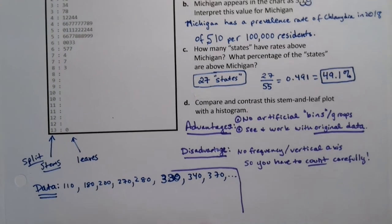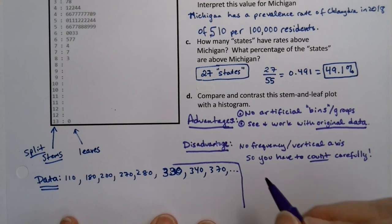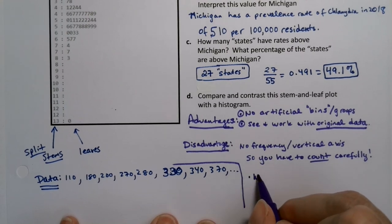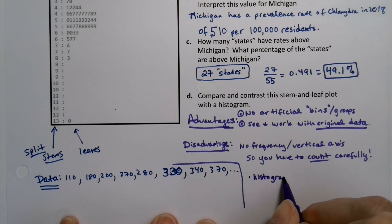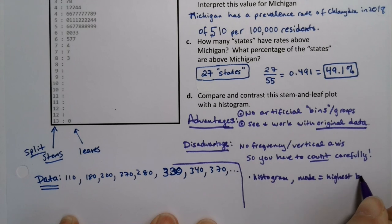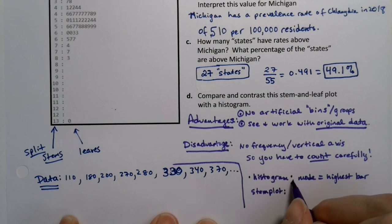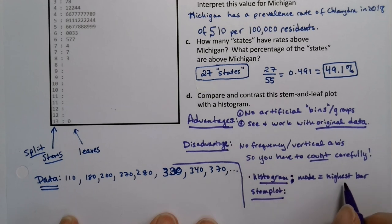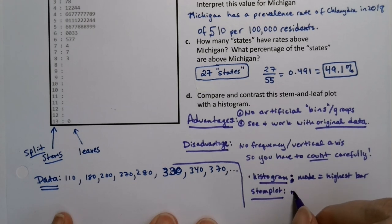Whereas in a histogram, it's just whichever bar is the easiest. These are also, by the way, called stem plots sometimes. So it's okay to say stem-and-leaf plot or stem plot. So in a histogram, the mode is the highest bar. In a stem plot, the mode is the most frequent number. So that's a little bit harder to see.